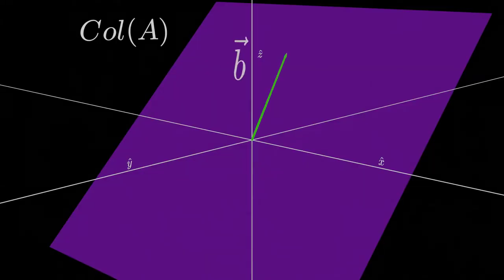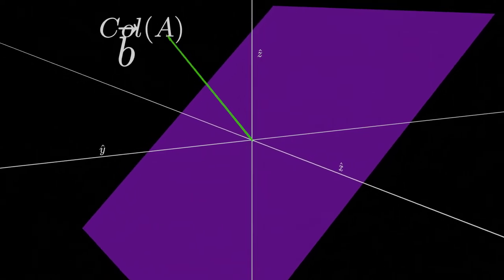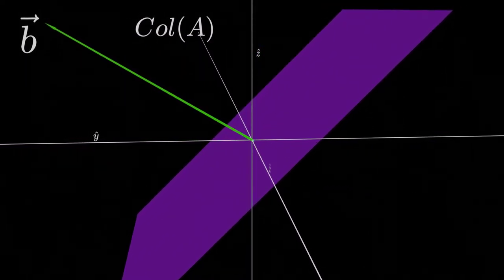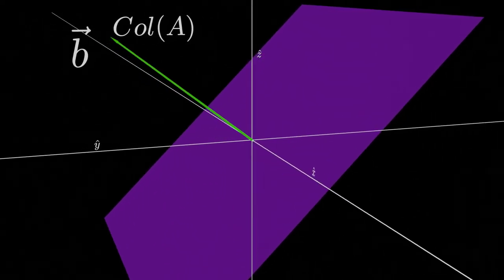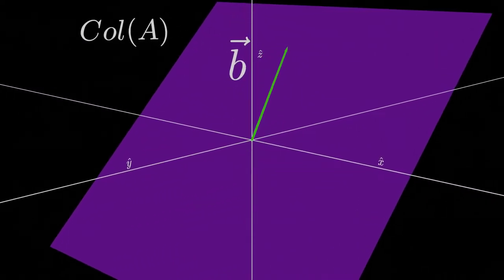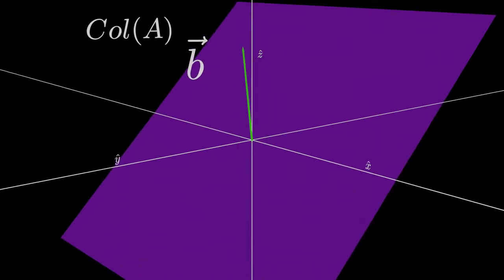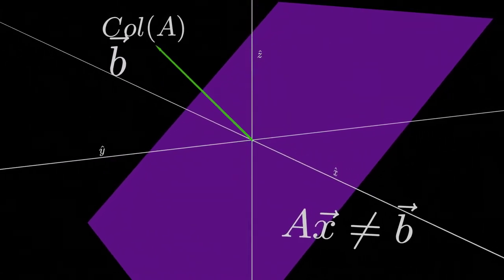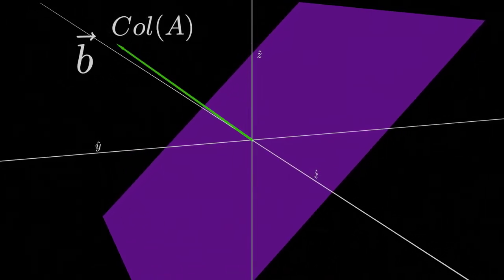And so, as such, our B vector can sit outside of the plane of the column space of our A matrix. And so there is going to be no X vector that we can put into the system that is going to reproduce that B vector, since it does not sit in the plane of our column space.